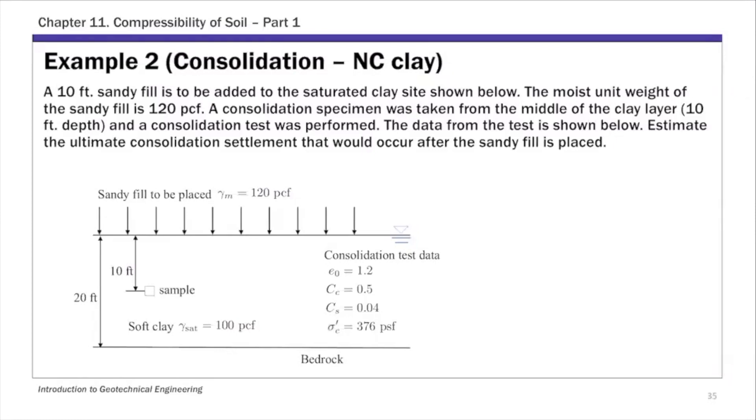For this example, example 2 from chapter 11, we have a consolidation problem. We have a 20-foot soft clay layer, and we're taking a soil sample at the middle of the clay layer and conducting a 1D consolidation test. So we get these data here: initial void ratio, the compression and recompression index slopes, and the pre-consolidation pressure. That's pretty typical from a 1D consolidation test. We're going to place a large sandy fill on top, loading the soil. We know the unit weight and height of this sandy fill—10 feet of sandy fill. Let's estimate the primary consolidation settlement.